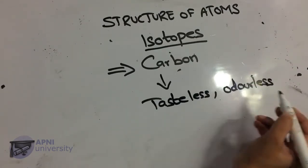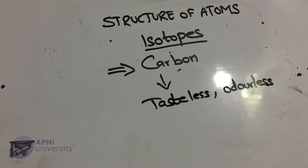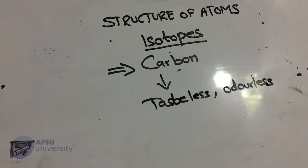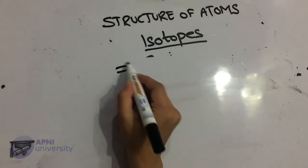Different forms of carbon are black or grayish-black solids, except diamond. They are also odorless and tasteless. They have high melting and boiling points and are insoluble in water.